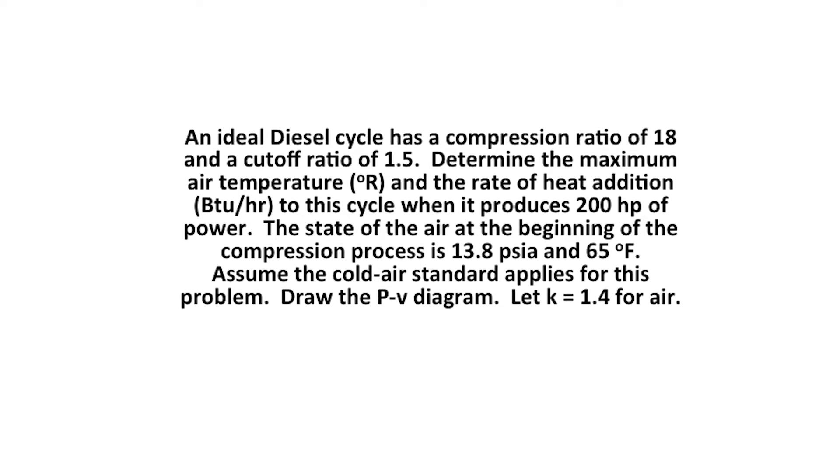An ideal diesel cycle has a compression ratio of 18 and a cutoff ratio of 1.5. Determine the maximum air temperature in degrees Rankine and the rate of heat addition in BTU per hour to this cycle when it produces 200 horsepower of power. The state of the air at the beginning of the compression process is 13.8 pounds per square inch and 65 degrees Fahrenheit. Assume the cold air standard applies for this problem. Draw the PV diagram. Let K equal 1.4 for air.